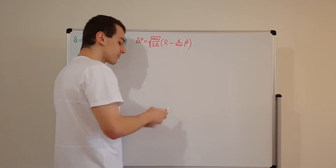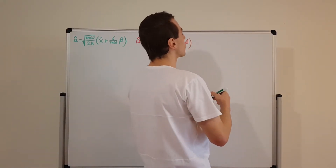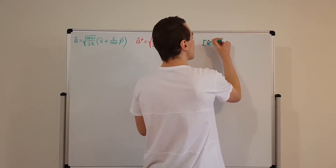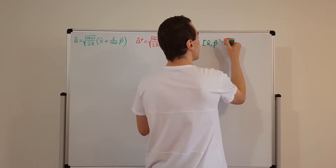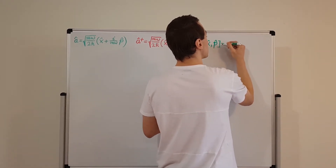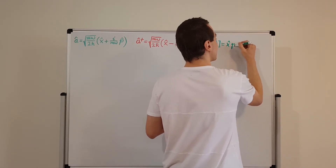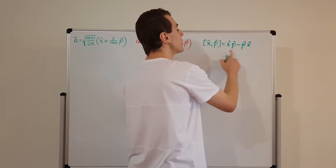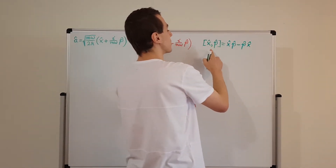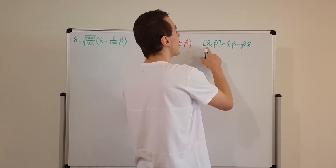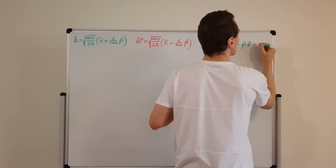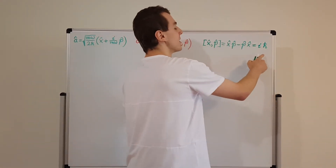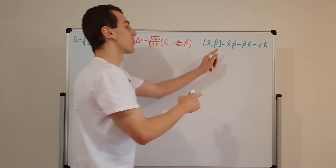Now I also want to define the canonical commutation relation, which we'll need in the derivation. The commutator of position and momentum is defined as [x̂, p̂] = x̂p̂ − p̂x̂, and this turns out to equal iℏ. There's a separate video where I derive this. This is called the canonical commutation relation, and we're going to use it shortly.